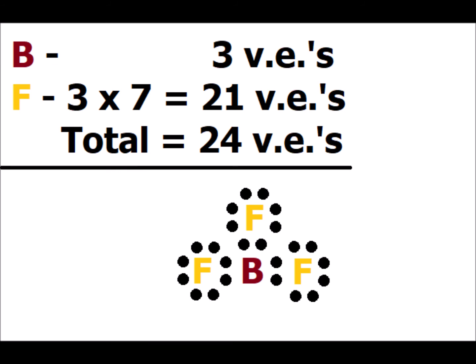Next, we look at boron trifluoride, BF₃. We have to allocate the valence electrons throughout the molecule. We can satisfy the octet rule for each fluorine atom, shown with yellow circles, but we cannot satisfy the octet rule for boron, which has only six electrons. This is possible for elements such as boron and aluminum, making molecules which are electron deficient and which tend to be potent Lewis acids. And we know from experience that BF₃ is a very powerful Lewis acid.